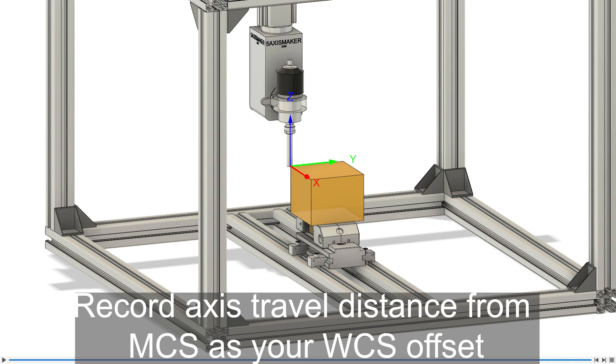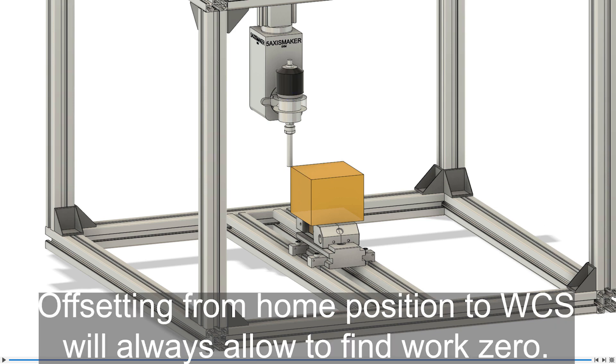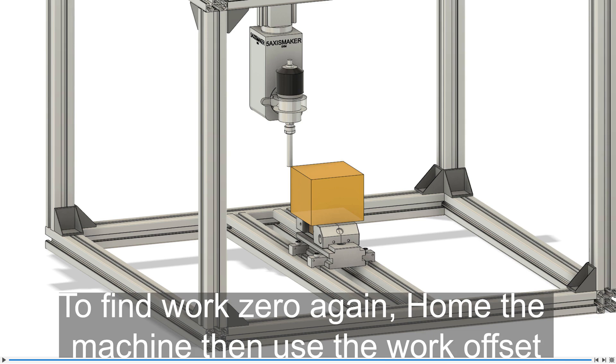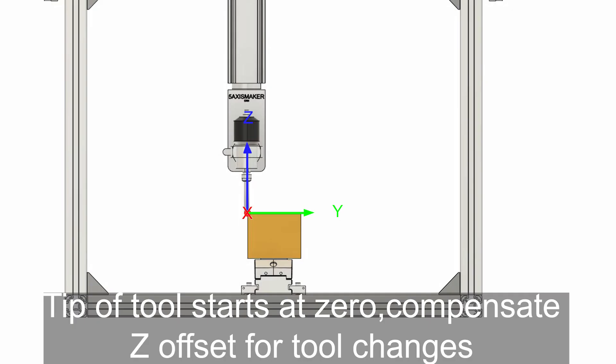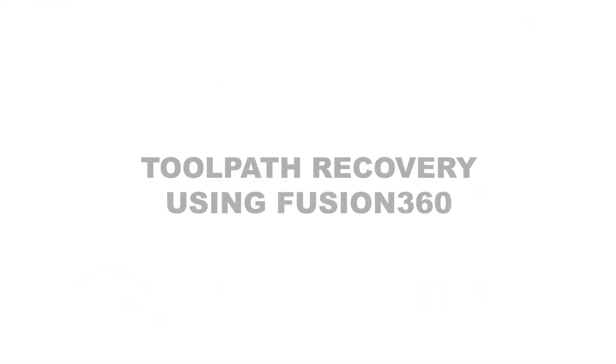Offsetting from home position to WCS will always allow you to find work zero. To find the work zero again, home the machine, then use the work offset. Your tip of the tool starts at zero, so remember to compensate your Z offset for tool changes.